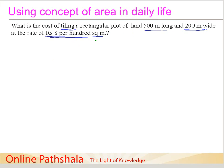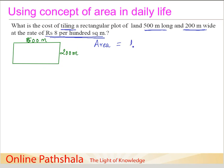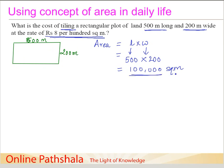Since we have the rate in terms of area per 100 square meters, we first need to find out the area of the rectangular plot and then proceed to find the cost. We can draw the rectangular piece of land whose length is 500 meters and width is 200 meters. The area of a rectangle is length multiplied by width, so substituting 500 for L and 200 for W gives us 100,000 square meters.